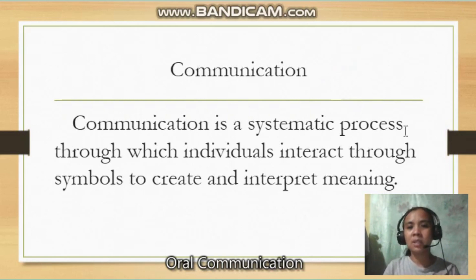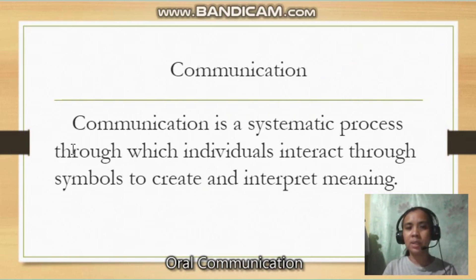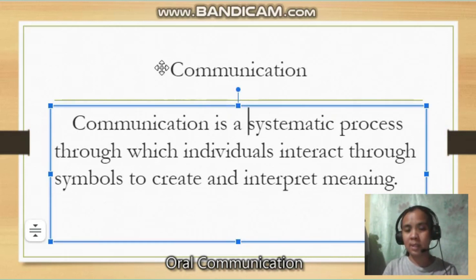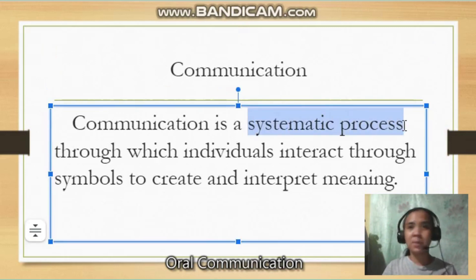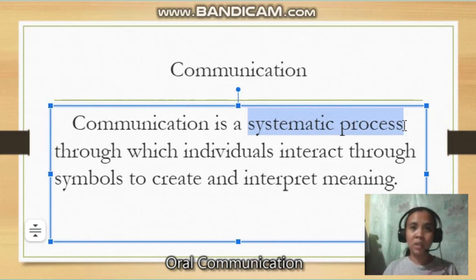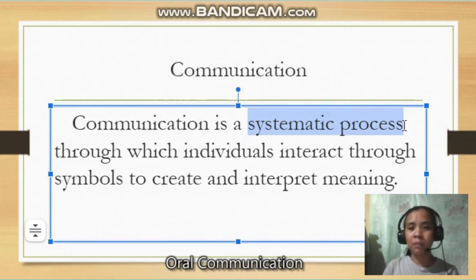Communication is a systematic process through which individuals interact through symbols to create and interpret meaning. As you can see, communication is a systematic process. Just like when you do your science experiments, there are steps that you have to follow. You don't do step one followed by step seven and then jump back to step three. Communication is also a systematic process — there's a sequence, steps that we follow for it to be effective.